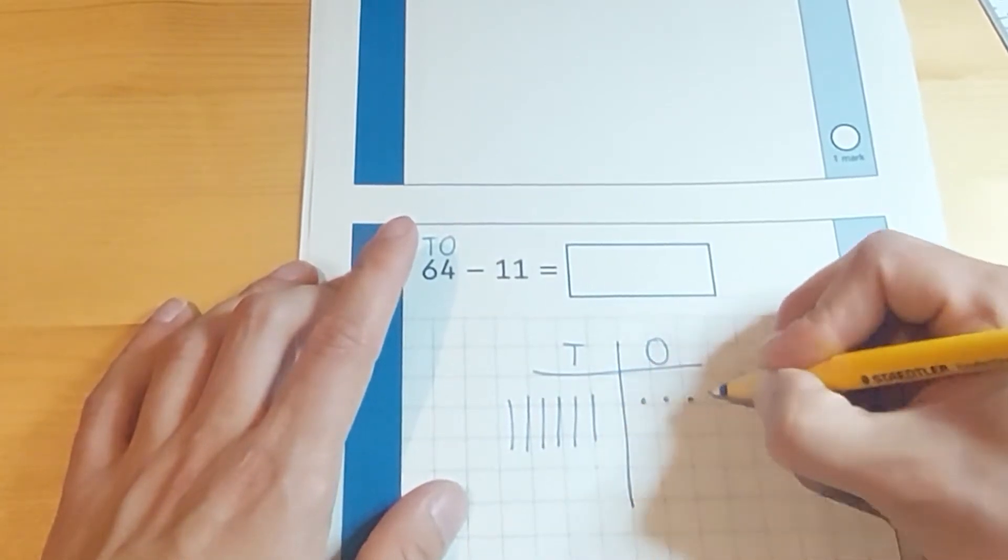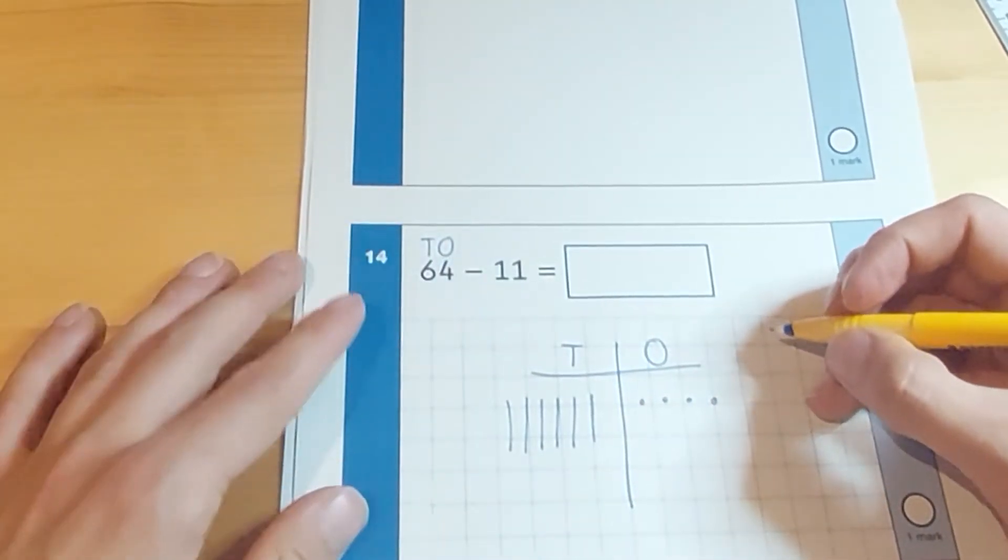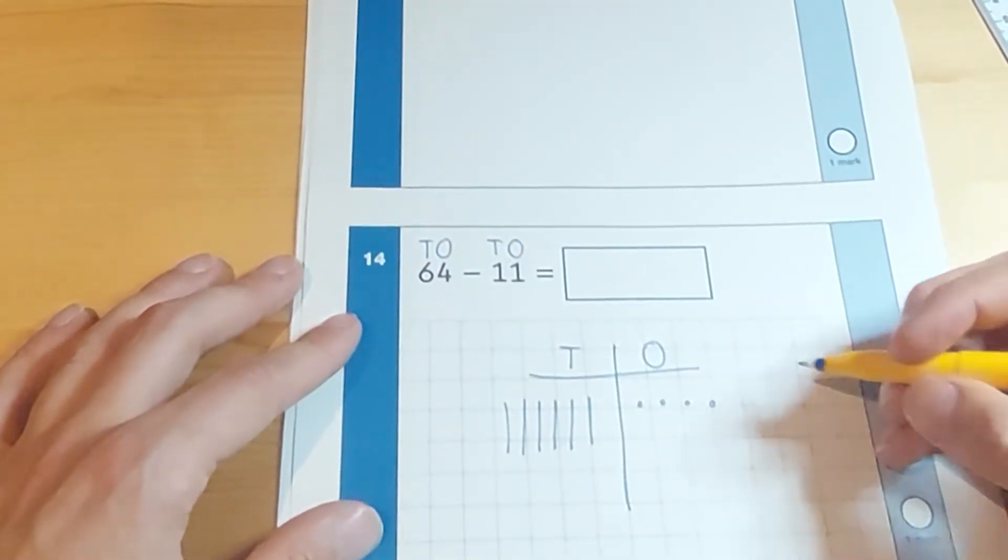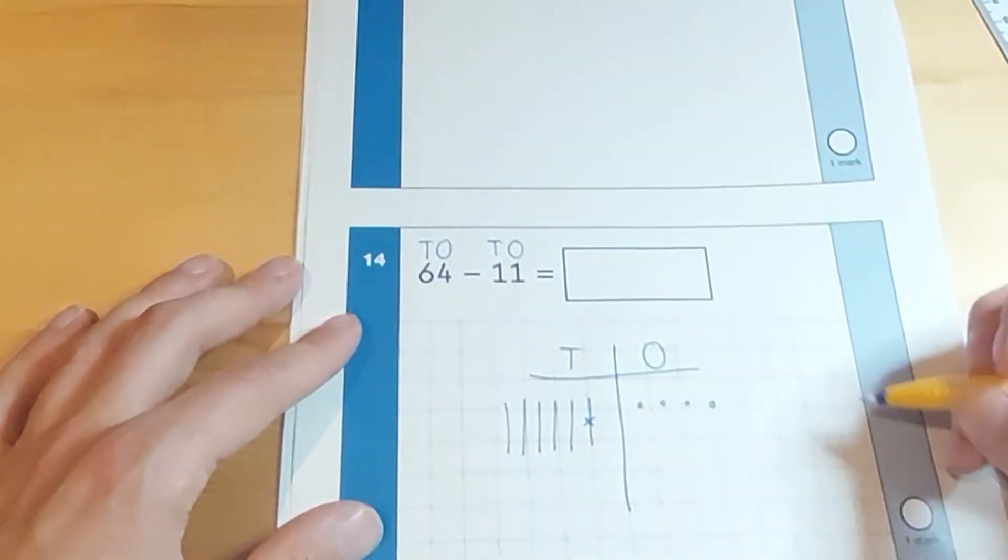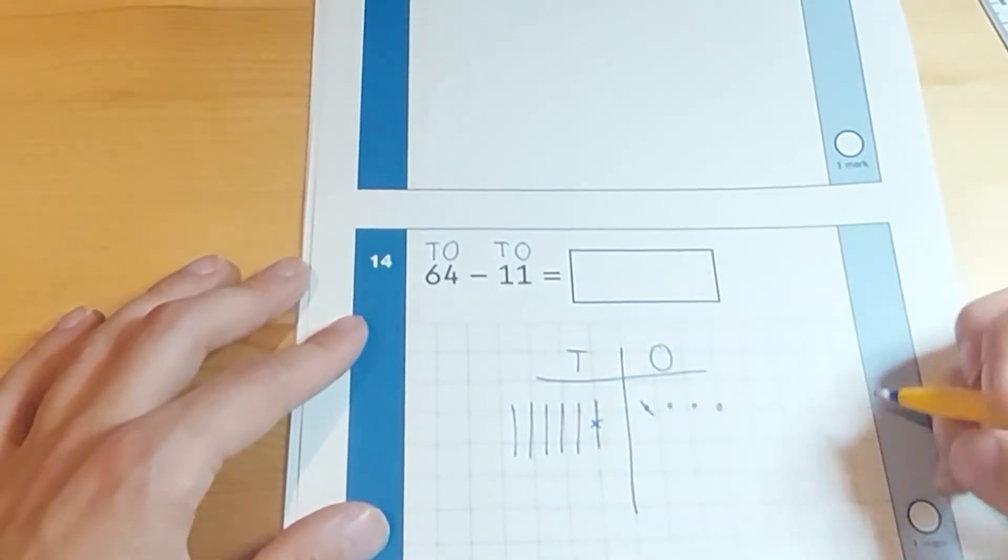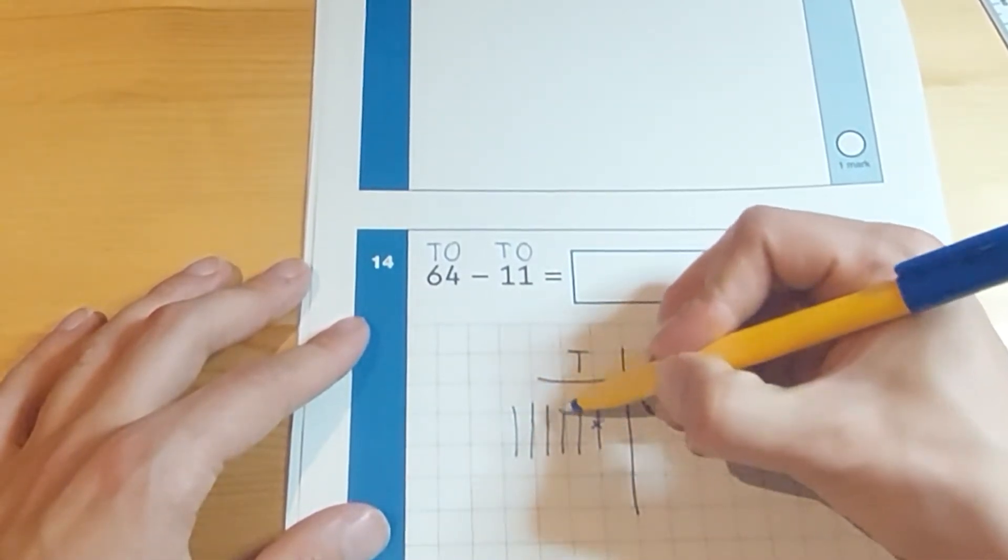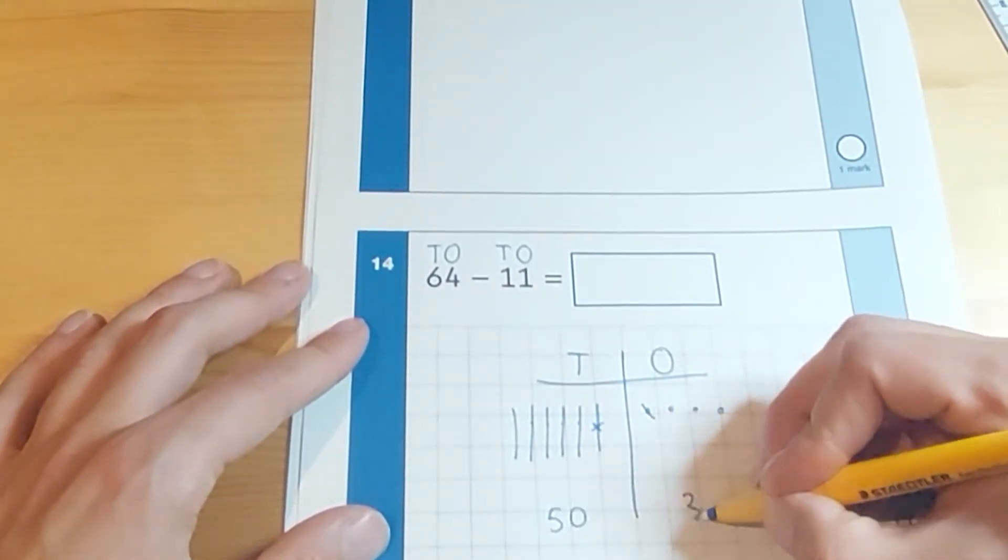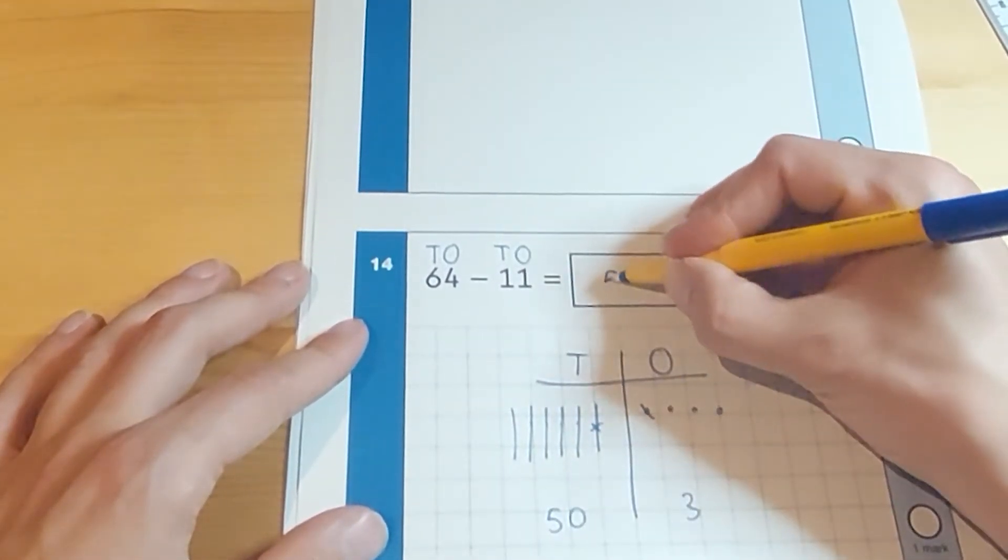Now we're going to take away and we would tell the children take away the tens first and then the ones. So take away one 10, gone. Take away one one, gone. What's left? 10, 20, 30, 40, 50 over here and how many ones? 1, 2, 3. Leaving us with an answer of 53.